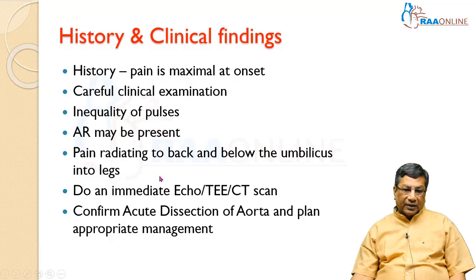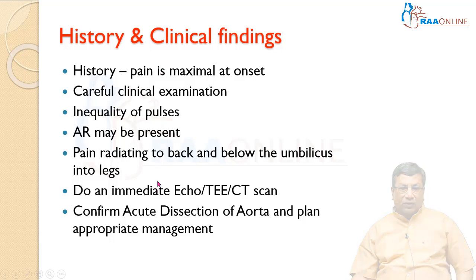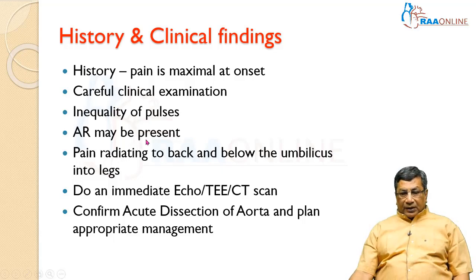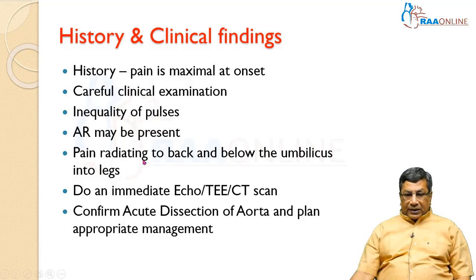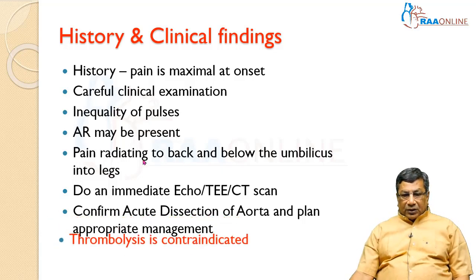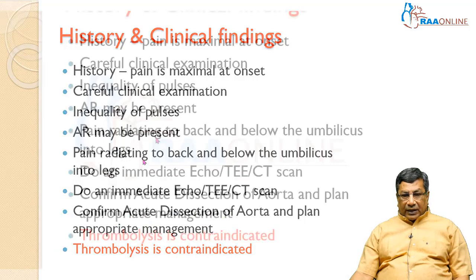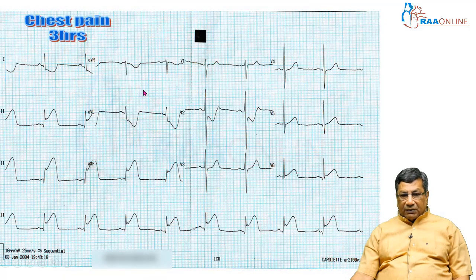When you suspect a dissection, please do echo, transesophageal echo, or CT scan before you thrombolyze, because thrombolysis is contraindicated in acute dissection. Acute dissection may also present with ST elevation if there is a coronary dissection, so you might automatically consider thrombolysis — but if the patient has got a dissection, thrombolysis is going to be dangerous. Thrombolysis is contraindicated in dissection.